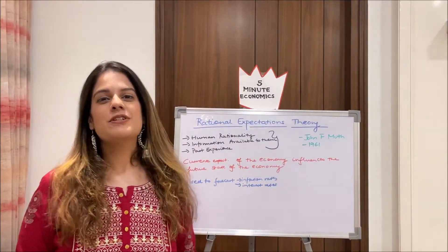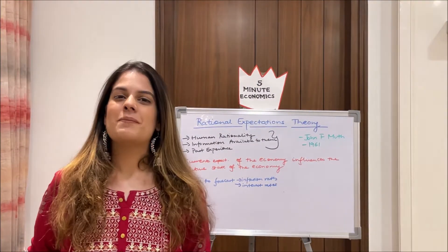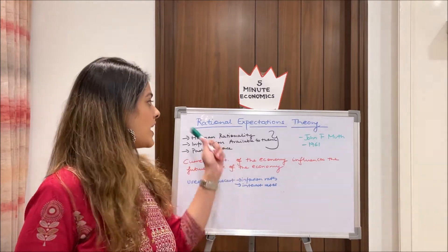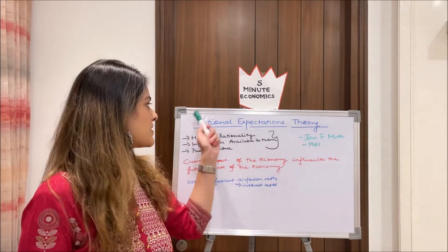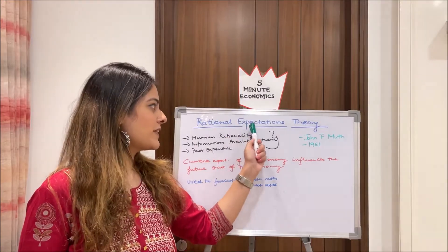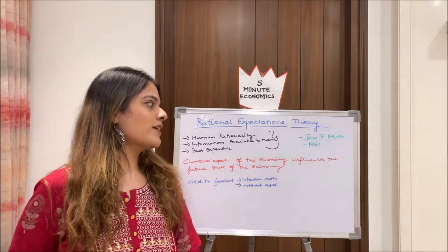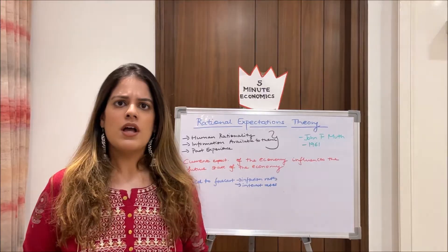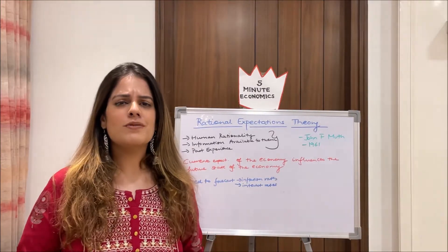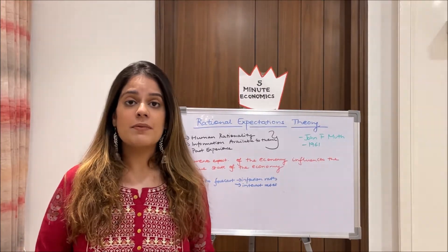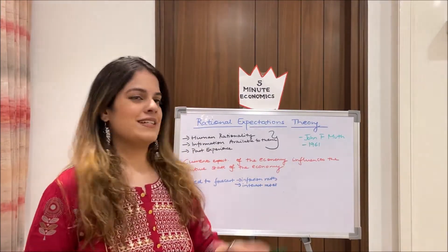Let me introduce this topic and give you a little background about this theory. Rational expectations theory, also known as RATEX — derived from the words rational and expectations — was discovered by John F. Muth in the year 1961. Remember this name, John F. Muth, because many competitive examinations ask who developed the RATEX theory.